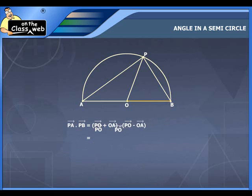This equals PO vector whole squared minus OA vector the whole squared which is equal to PO square minus OA square. This equals 0 since PO is equal to OA.